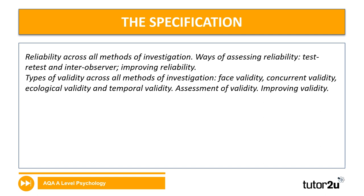What does the spec say about reliability and validity? Well, it actually says quite a lot. It says reliability across all methods of investigation, and we've got ways of assessing reliability, which is test-retest and inter-observer reliability, and then improving reliability. Similarly, for validity, we've got types of validity across all methods of investigation. Then we've got face validity, concurrent validity, ecological validity, and temporal validity. And again, we've got assessment of validity and improving validity.